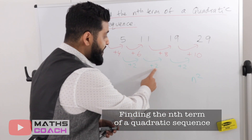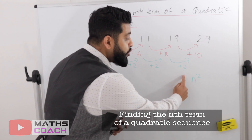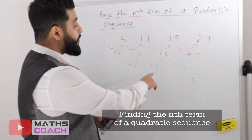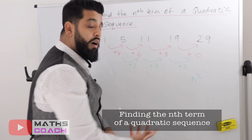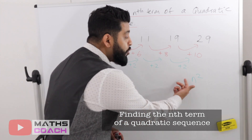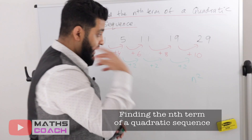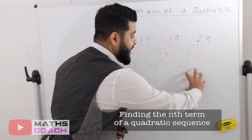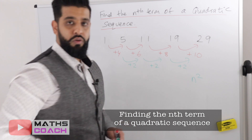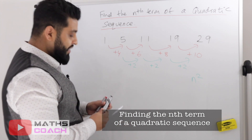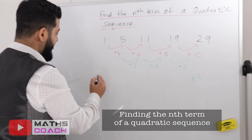Had the second difference been four, we'd half four and write 2n squared. Had it been five, we'd write 2.5n squared. The lesson here is: whatever the second difference is, you half it and write that value with n squared.